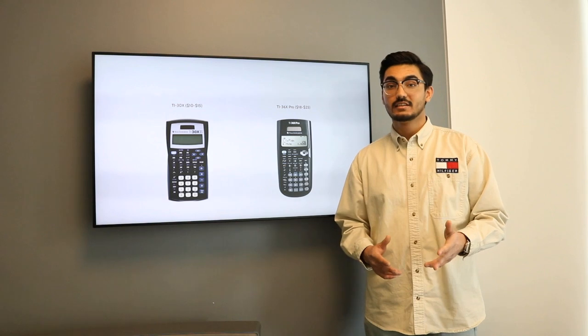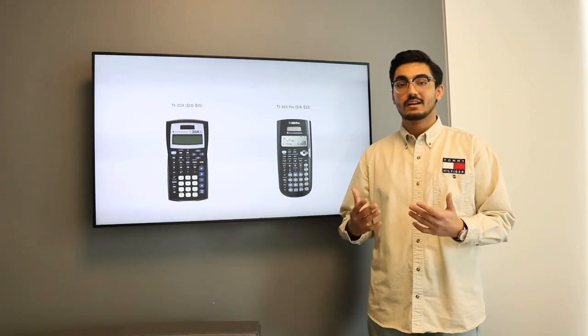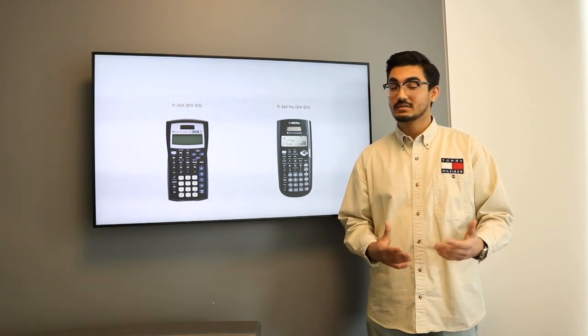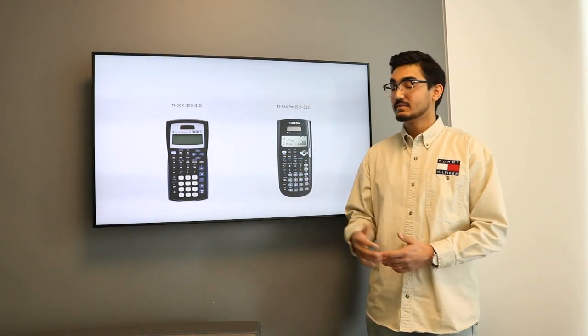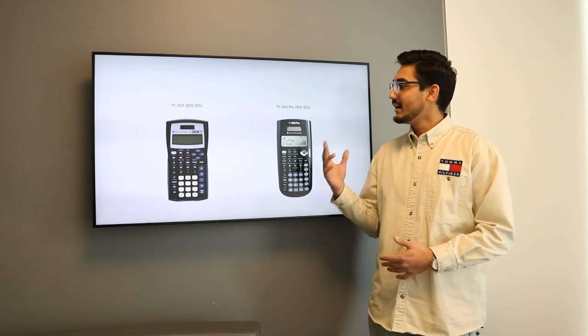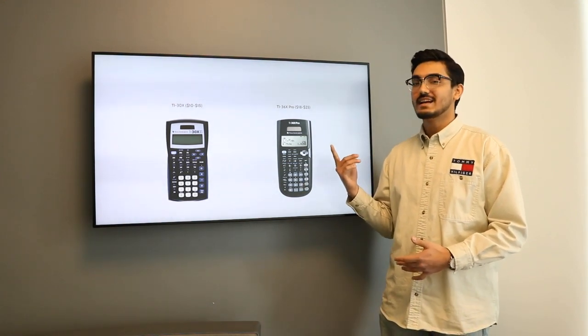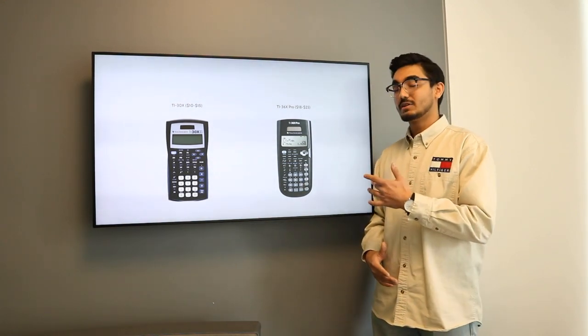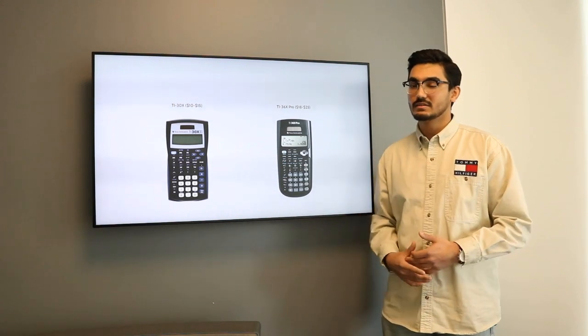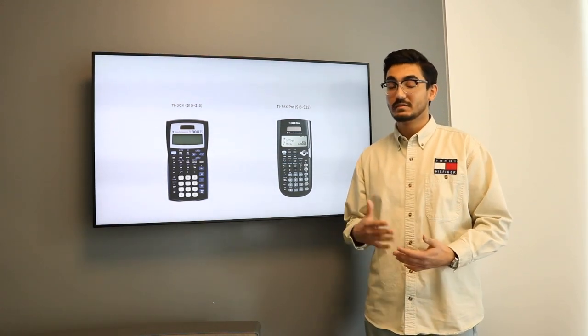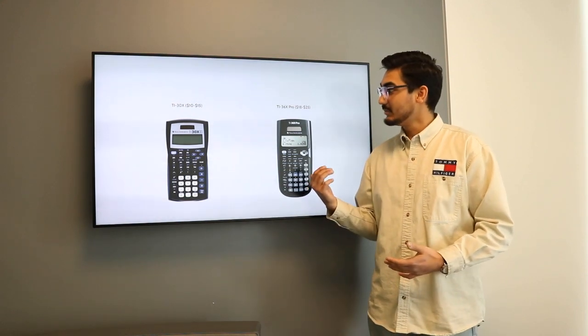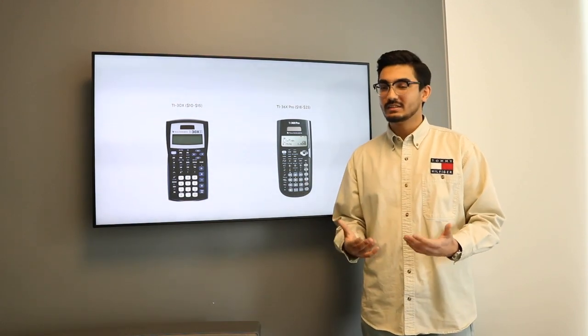The second calculator on the list is the Texas Instruments. Now it comes in a couple of different models. The two I have listed here are the TI-30X, which costs you around $10-$15, and the second one is the TI-36X Pro. That will cost you around $18-$25. The main difference between these is capabilities. So you'll be able to do more with the Pro model, but if you don't use it efficiently, you might as well go with the regular model and save some money.